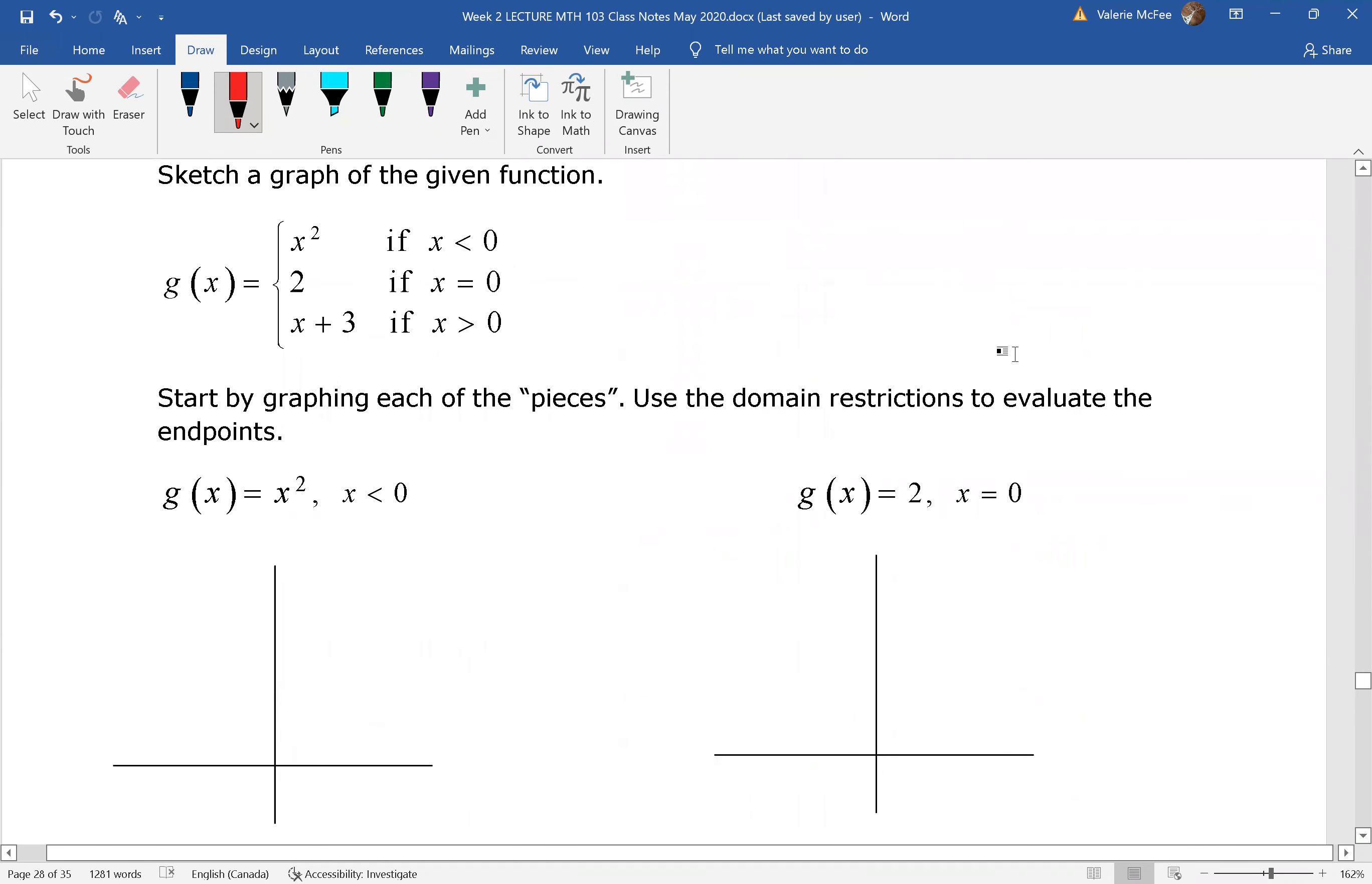You'll see that I've given us space to graph each piece separately. We're starting with the first piece: x² if x is less than 0. We said that we had an endpoint for the first piece at (0,0), and that we needed an open circle at (0,0).